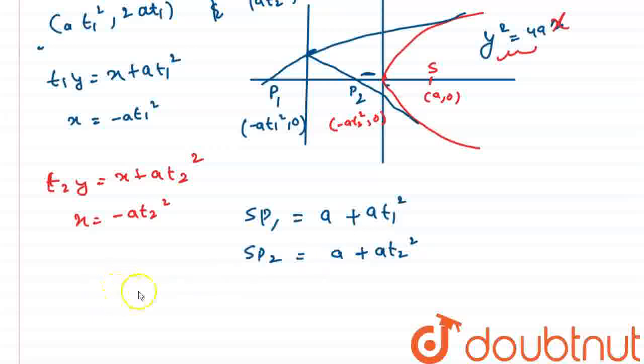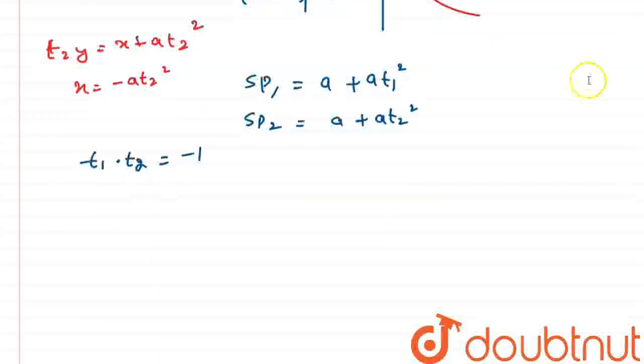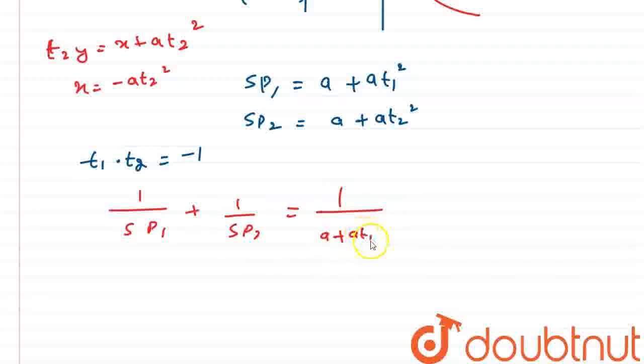Since we know the tangents are mutually perpendicular, so we have the rule that t1 dot t2 is equal to minus 1. Now, let's solve what is required. We have to find out the value of 1 upon sp1 plus 1 upon sp2 which will be equal to 1 upon a plus at1 square plus 1 upon a plus at2 square.